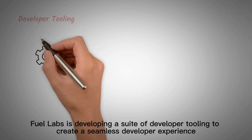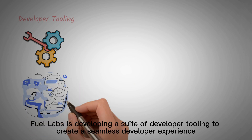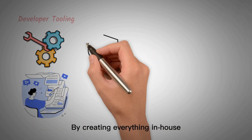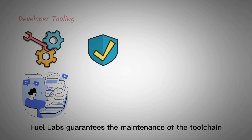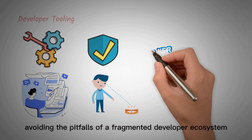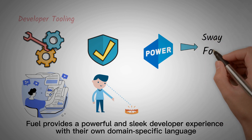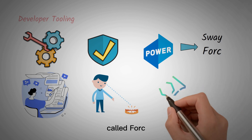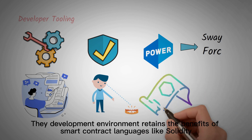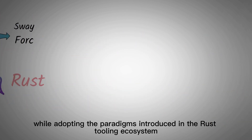Developer tooling: Fuel Labs is developing a suite of developer tooling to create a seamless developer experience. By creating everything in-house, Fuel Labs guarantees the maintenance of the toolchain, avoiding the pitfalls of a fragmented developer ecosystem. Fuel provides a powerful and sleek developer experience with their own domain-specific language called Sway, and a supportive toolchain called Forc. The development environment retains the benefits of smart contract languages like Solidity while adopting the paradigms introduced in the Rust tooling ecosystem.